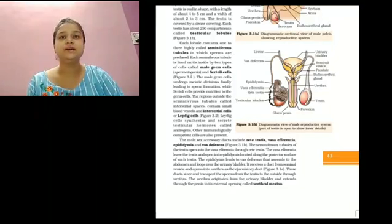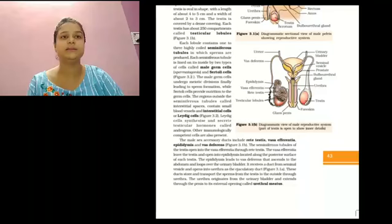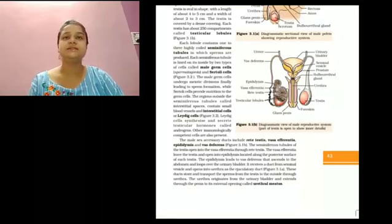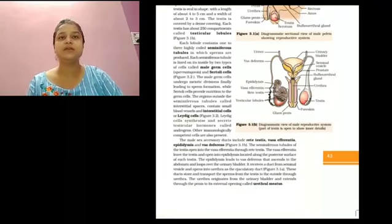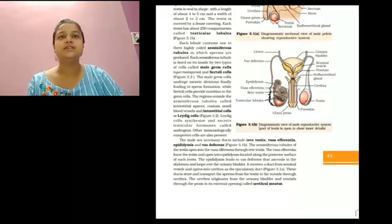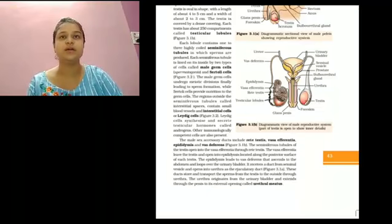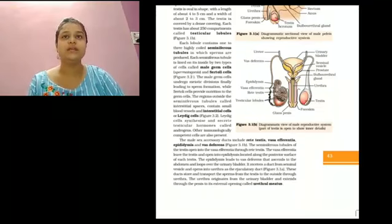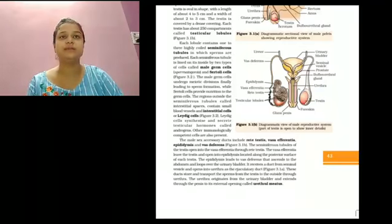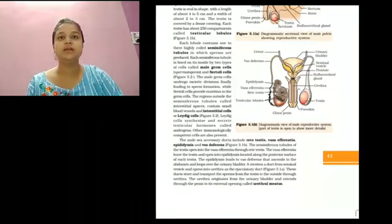Vas deferens is the duct that ascends into the abdominal cavity, loops over the urinary bladder, receives a duct from the seminal vesicles, and opens into the urethra as the ejaculatory duct. The ejaculatory duct stores and transports the sperm from the testis to the outside through the urethra. The urethra is a thin muscular tube that originates from the urinary bladder, passes through the penis to the external opening called the urethral meatus.